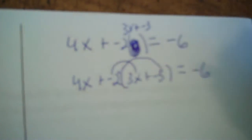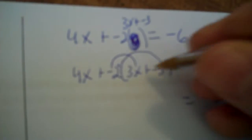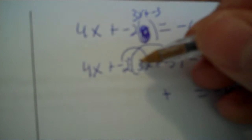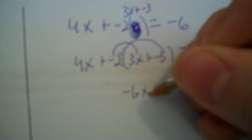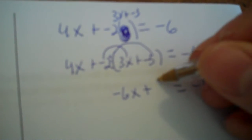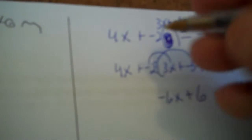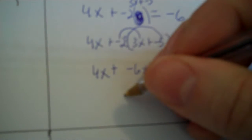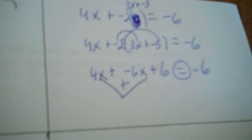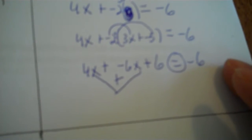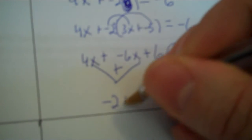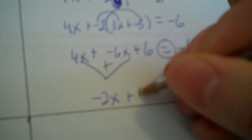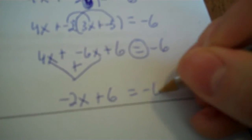Now you distribute. Drop your plus. Negative 2 times 3x is negative 6x. Negative 2 times negative 3 is 6. Then you add the 4x. V your x's and you add. 4 plus negative 6 is negative 2x. Plus 6 equals negative 6.